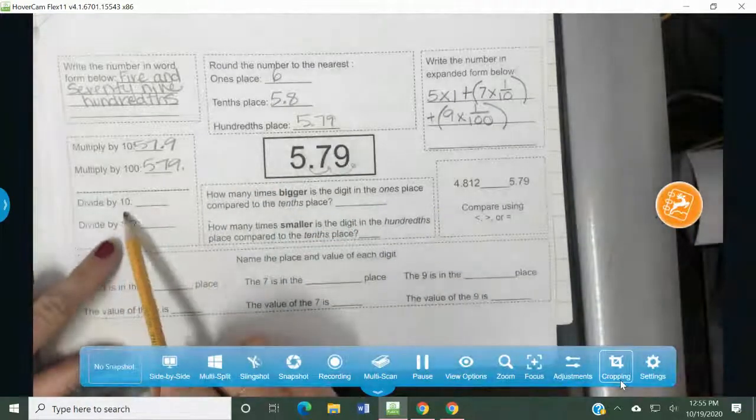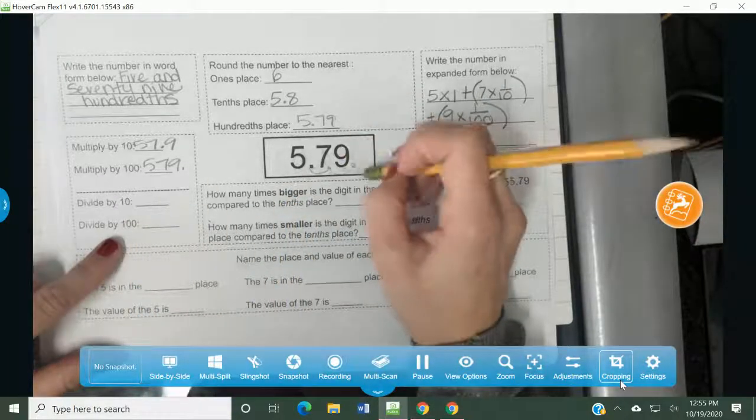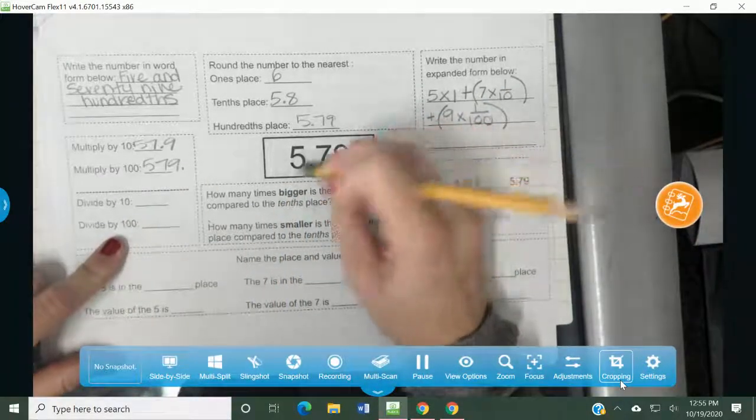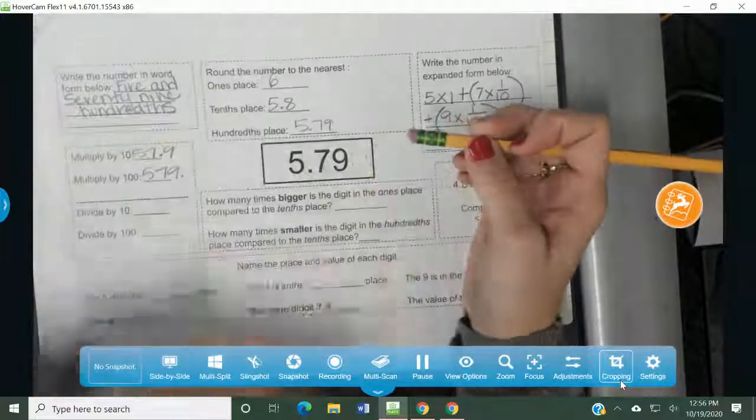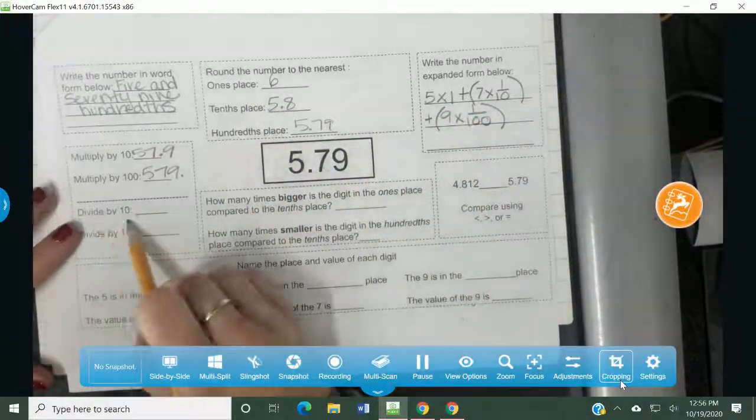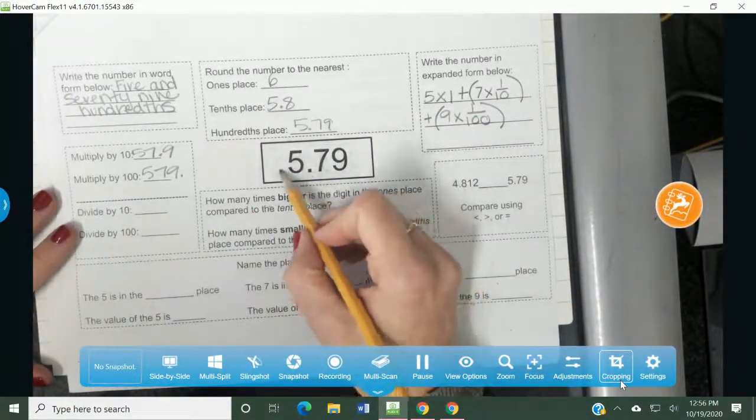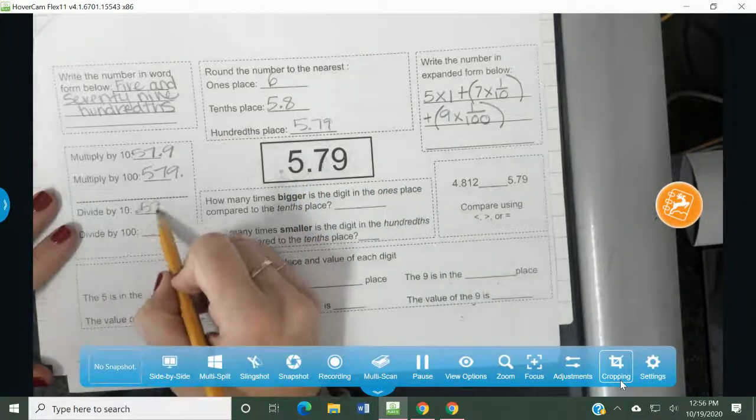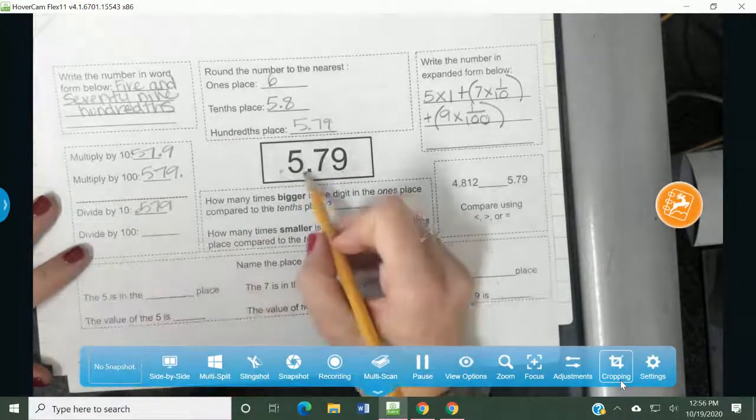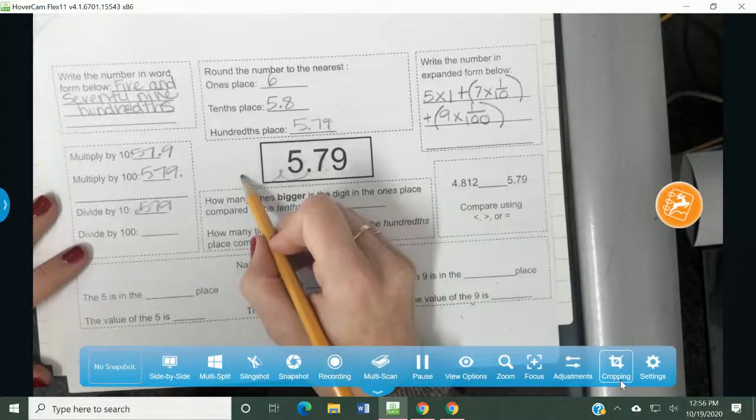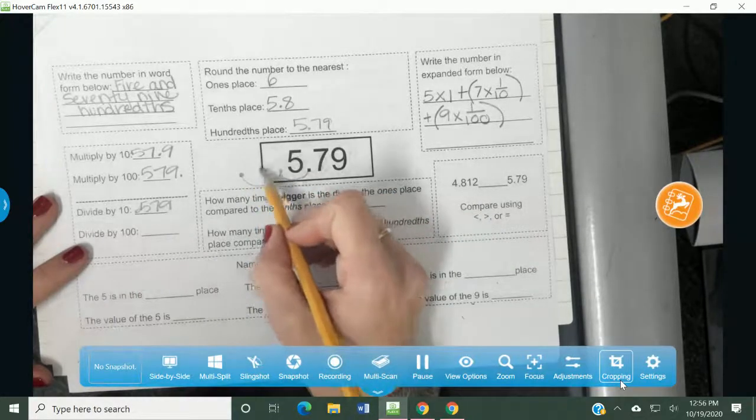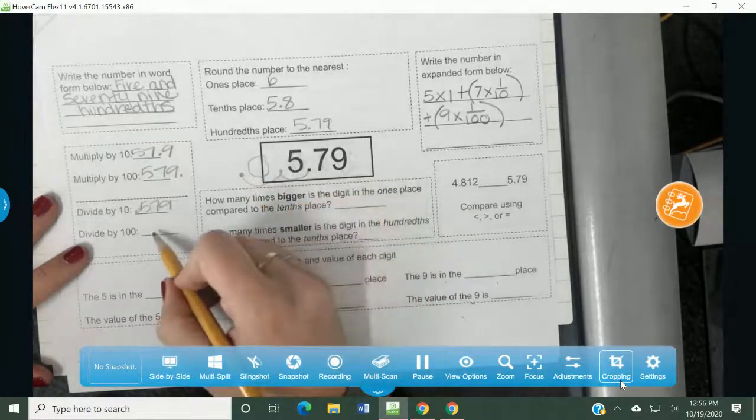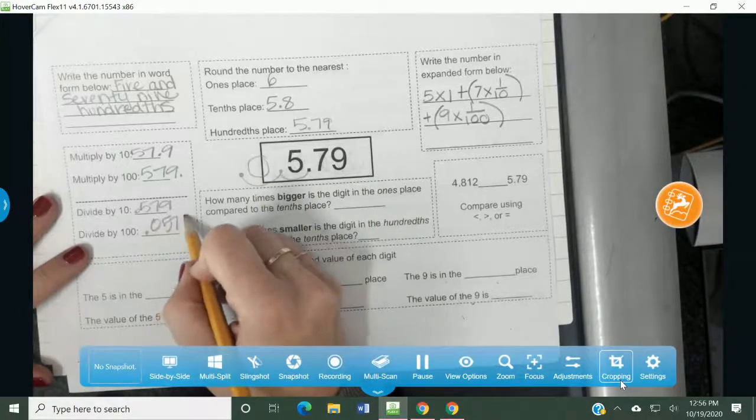If I divide, the opposite thing happens. The decimal moves to the left because whenever you divide, your number gets smaller. So if I divide by a ten, my decimal moves to the left once. So it's decimal five, seven, nine. If I divide by a hundred, it's going to move twice. Once, twice. Now, what's sitting here? An imaginary zero. So my answer is decimal zero, five, seven, nine.